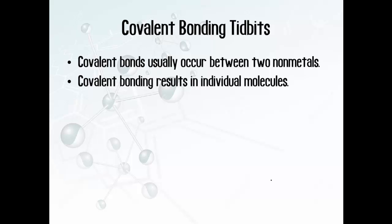Covalent bonding tidbits: covalent bonding tends to occur between two non-metals, which tend to have five, six, or seven valence electrons — close to the octet. If you have two atoms with seven valence electrons, if they both share, they can now each have an octet. So rather than one losing and one gaining, they share and everybody wins. Covalent bonding is sometimes called molecular bonding, and it results in individual molecules.